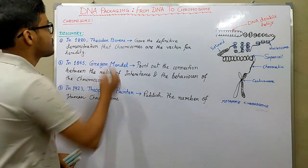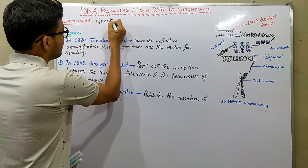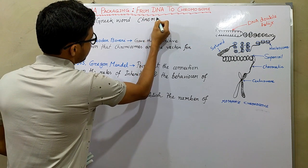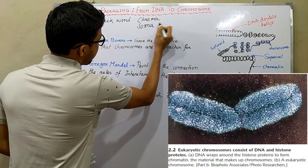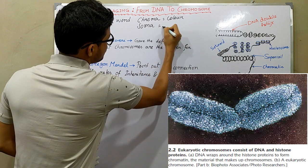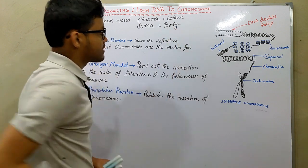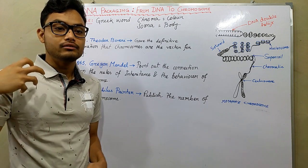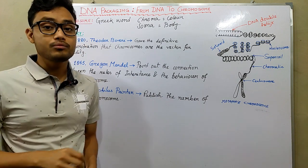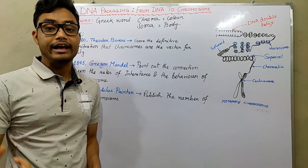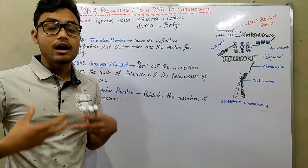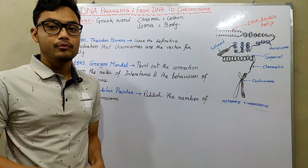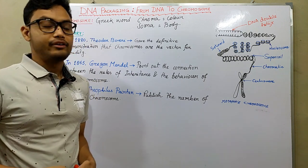The word 'chromosome' comes from a Greek word: 'chroma' means colored and 'zoma' means body, so chromosome stands for 'colored body.' When we introduce some stains into the chromosomes, the chromosomes are likely to take up those stains and produce a color.